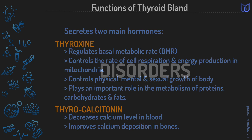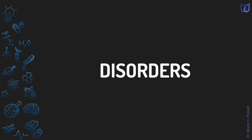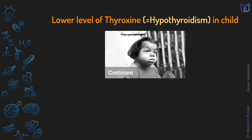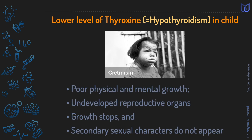Now let us talk about the disorders related to thyroid hormones. A lower level of thyroxine is called hypothyroidism. Hypothyroidism in children leads to the disease cretinism, characterized by poor physical and mental growth, undeveloped reproductive organs, arrested growth, and failure to develop secondary sexual characters.